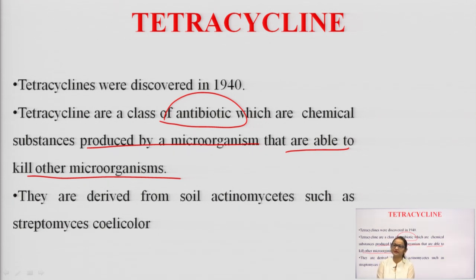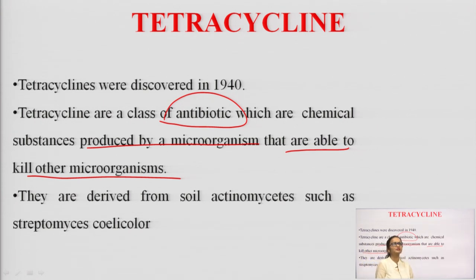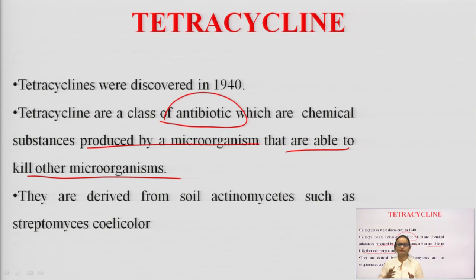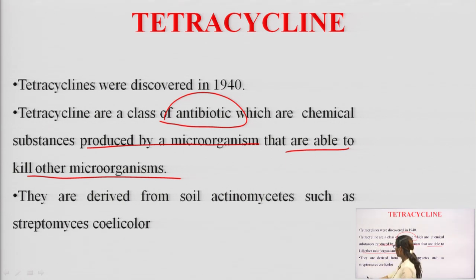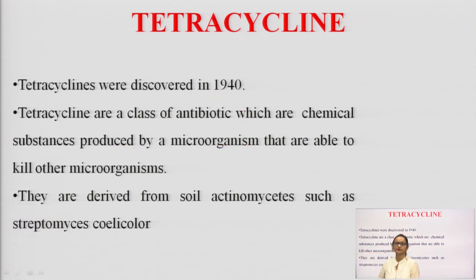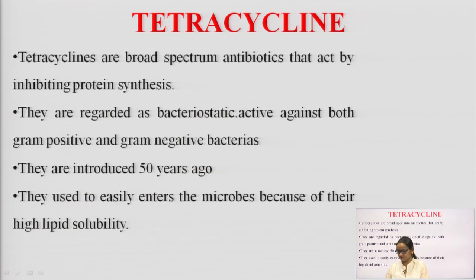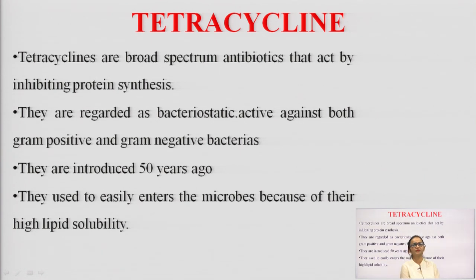The natural source microorganism can be a bacteria, a fungi, or an actinomycetes, but antibiotics are only active against bacteria. The antibiotic is obtained from one microorganism and it kills other microorganisms — not the one it came from. Tetracyclines are derived from soil actinomycetes, specifically Streptomyces coelicolor, by fermentation. They are broad-spectrum antibiotics that act by inhibiting protein synthesis.